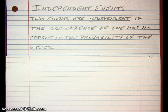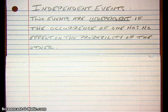Next, we're going to look at independent events. Two events are independent if the occurrence of one has no effect on the probability of the other.